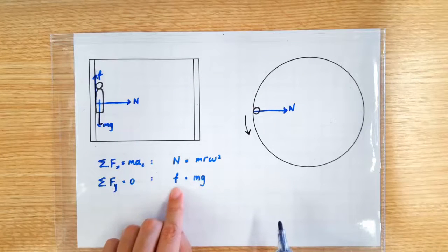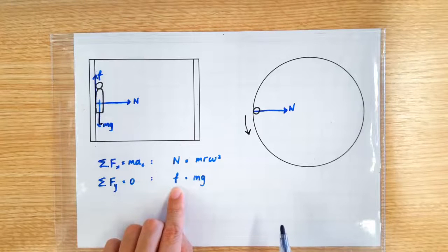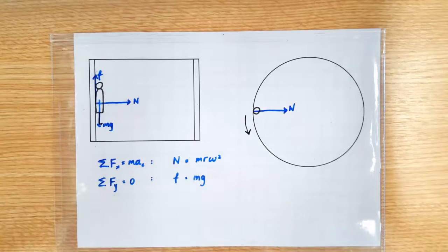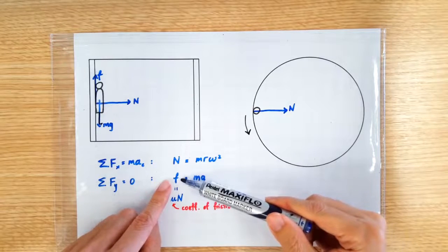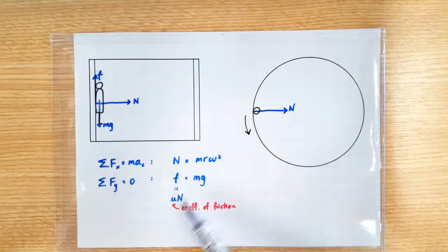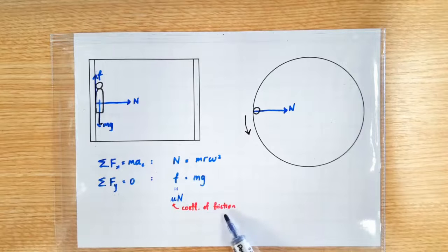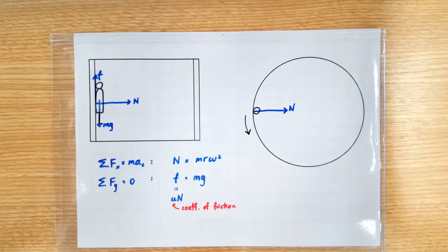Do you know that the frictional force is actually directly proportional to the normal contact force? So we can actually write friction as μn, where μ is the coefficient of friction. It's just a constant between two surfaces.